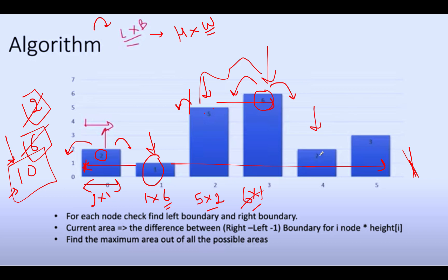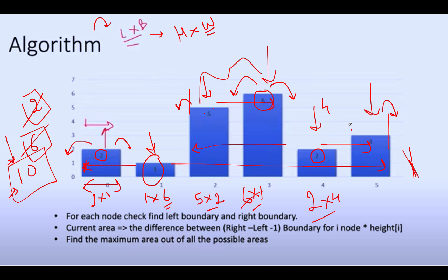Next, height is 2 units. It stretches across 4 bars in total, so 2 × 4 = 8. Since 8 is lower than 10, we skip it. The last bar has height 3 and stretches only 1 unit, giving 3 × 1 = 3, which is also lower than the maximum value of 10. So we skip that as well.